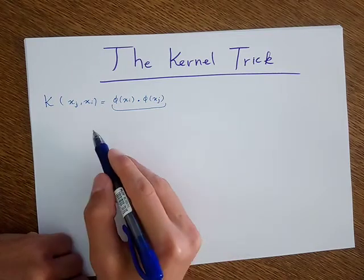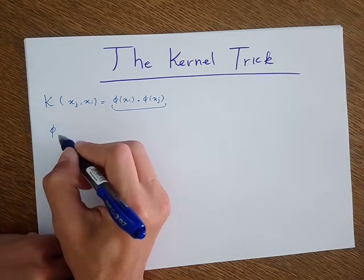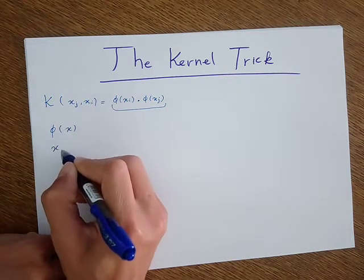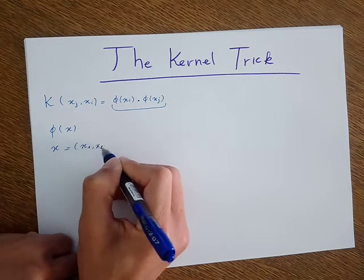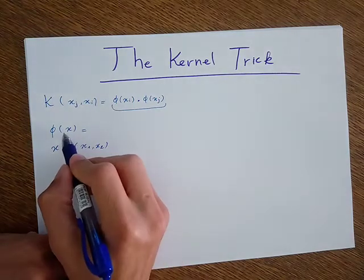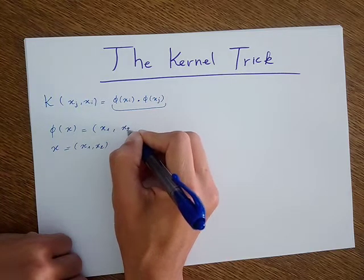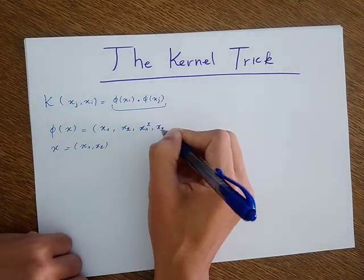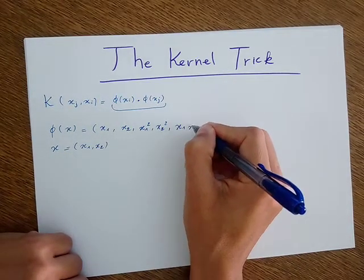To give a concrete example, I'll talk about the case of quadratic polynomial expansion. The original feature space has two features, x1 and x2. This means the quadratic polynomial expansion would have five features: x1, x2, x1 squared, x2 squared, and x1 multiplied by x2.